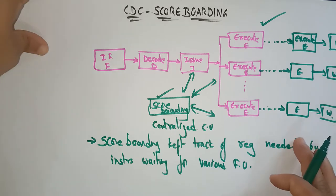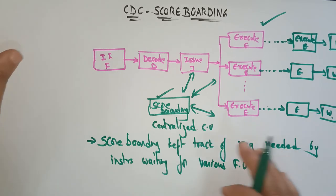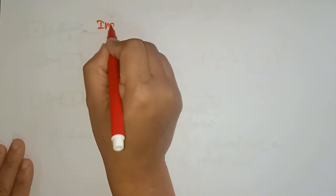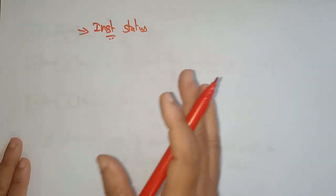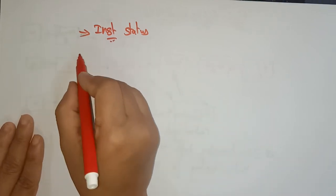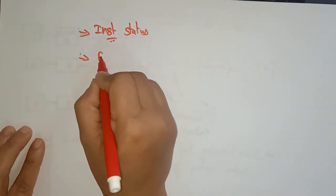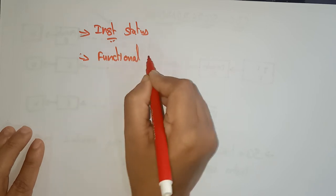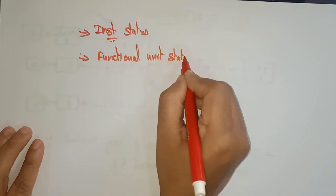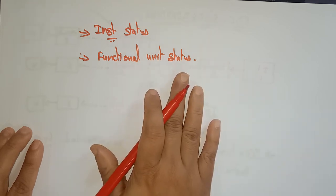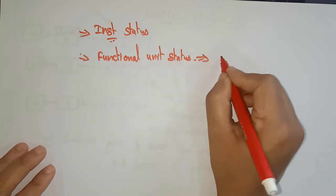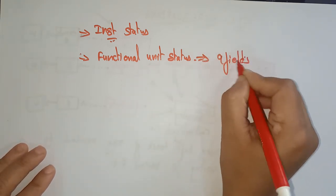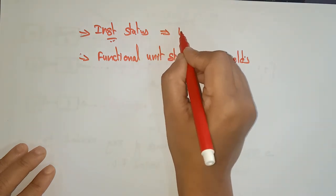Scoreboarding consists of three parts. The first is Instruction Status — it indicates four steps that the instructions go through. The second is Functional Unit Status — it indicates the status of the functional units and consists of nine fields for each functional unit. The Instruction Status indicates the four steps the instructions go through.